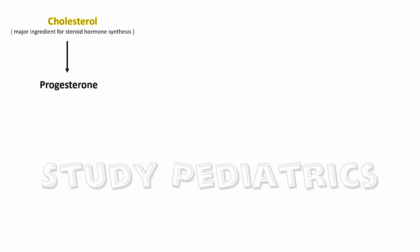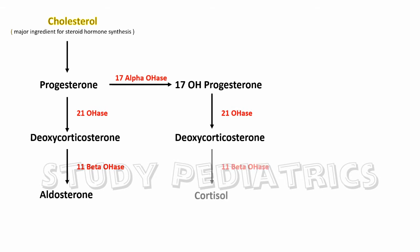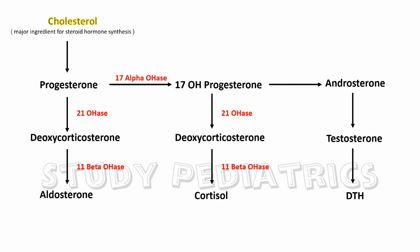Cholesterol is the major ingredient for steroid hormone synthesis. Cholesterol forms progesterone, which is the starting point for other compounds. Progesterone with the help of enzyme 21-hydroxylase forms deoxycorticosterone, which later forms aldosterone with the help of 11-beta-hydroxylase. With the help of 17-alpha-hydroxylase, progesterone forms 17-hydroxyprogesterone, which follows a similar path to form cortisol. This 17-hydroxyprogesterone also helps in formation of androgens, i.e., testosterone. Thus, just three enzymes need to be remembered and the whole story is easy to understand.